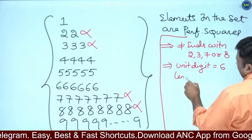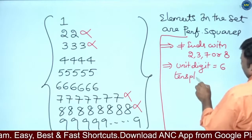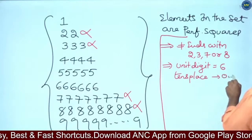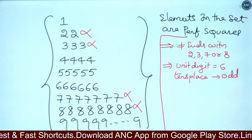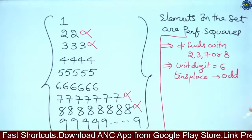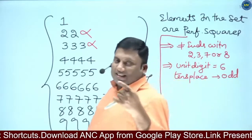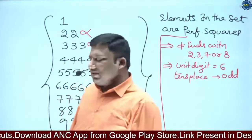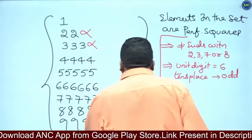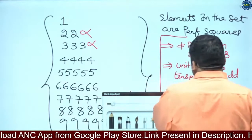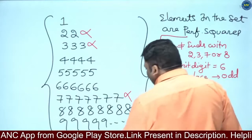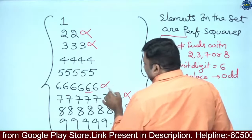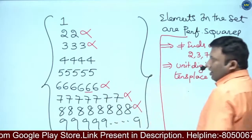Second concept: if a perfect square's unit digit is 6, then the tens place digit must be odd. For example: 4² = 16, 6² = 36, 14² = 196, 16² = 256. Any perfect square ending with 6 must have an odd tens digit. For 666666, the tens digit is 6, which is even — so it is not possible.